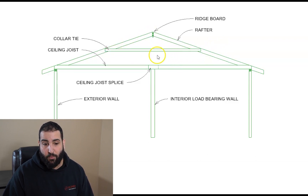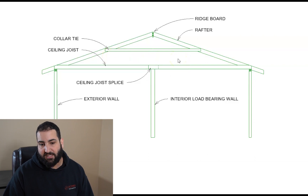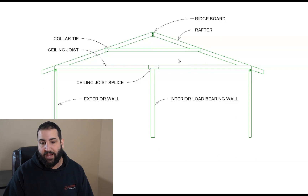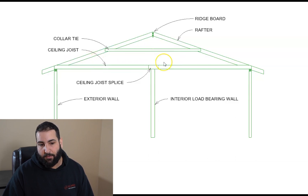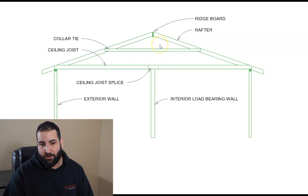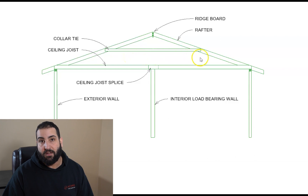Moving down, we have the collar tie — a member framed between the rafters, connecting the two rafters together. A common misconception is that collar ties are always in tension. Based on where they're located, they might be in tension or compression. If they're within the lower third of the rafter span, they'll likely be in tension; if they're higher up, they're in compression. Having a collar tie splits up the span for your rafters, so it allows you to shorten the span of the rafter that's in bending and get away with a smaller member size.